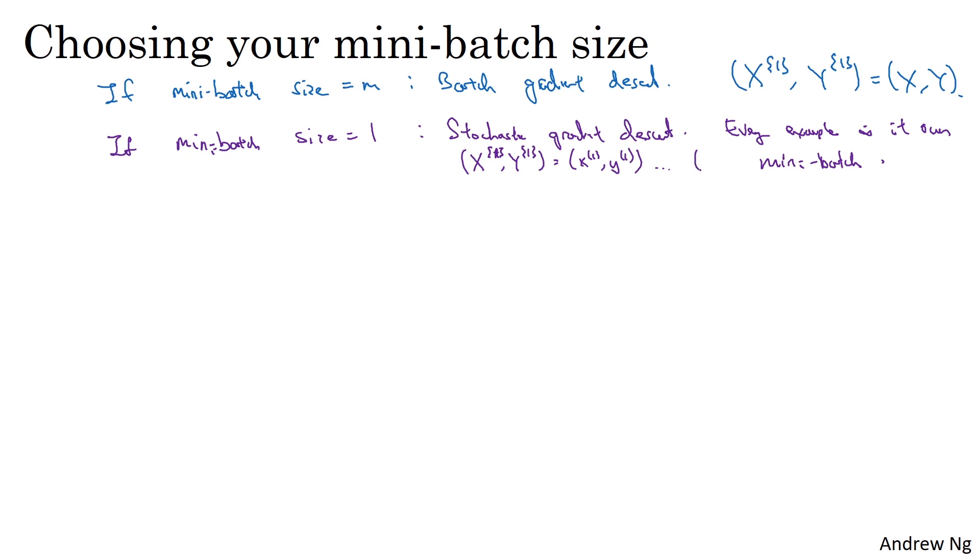And then you next take a look at your second mini-batch, which is just your second training example, and take a gradient descent step with that. And then you do it with the third training example, and so on, looking at just one single training example at a time.